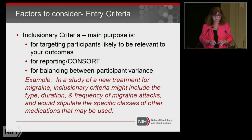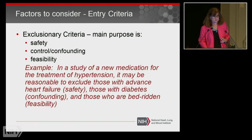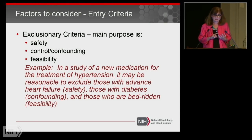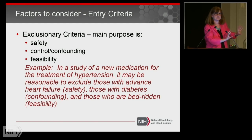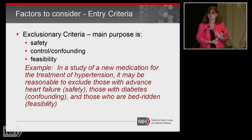Contrast that with exclusionary criteria. The main purpose of exclusionary criteria is to establish safety, to control confounding factors, and for feasibility. When you set out the criteria by which you are not going to allow someone to participate in the study, the most important reason to exclude someone is for safety. If the study is going to be too high risk for that particular characteristic of a participant, you don't want them in your study.